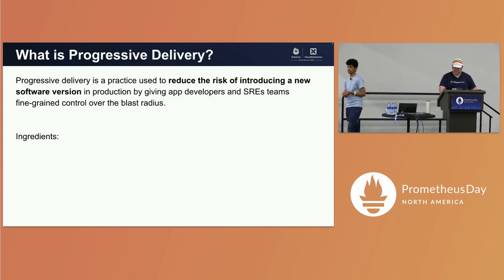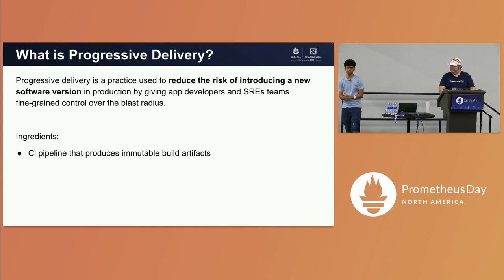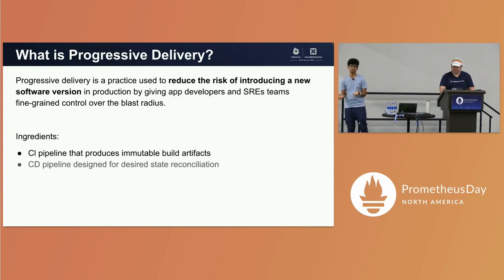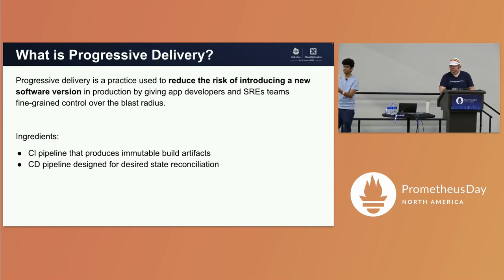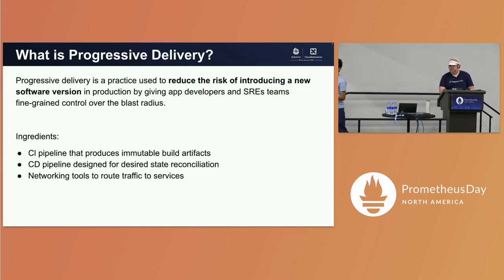What do you need to implement progressive delivery in your cluster? The first thing you need is a CI pipeline. The next thing you need is a continuous delivery system — something like Flux or Argo — which can take those artifacts published by your CI pipeline and deploy them onto your cluster. Then you need a service mesh and ingress for traffic to come through and hit your applications.